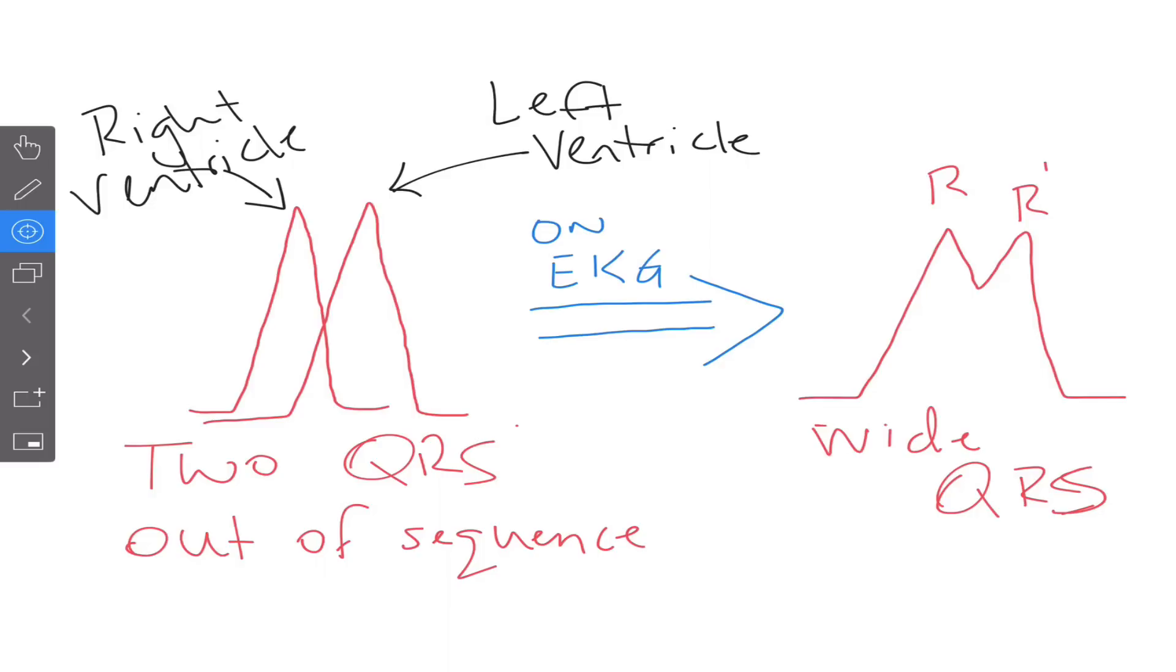To get to a point where you're calling it a bundle branch block, a few things have to be in place. You have to have a QRS width that is greater than 0.12 seconds or three small boxes. And you might ask, well, what happens if one of the QRS spikes is wider than another on my 12-lead? We always recommend go with the widest to make your interpretation. So let's get started here.